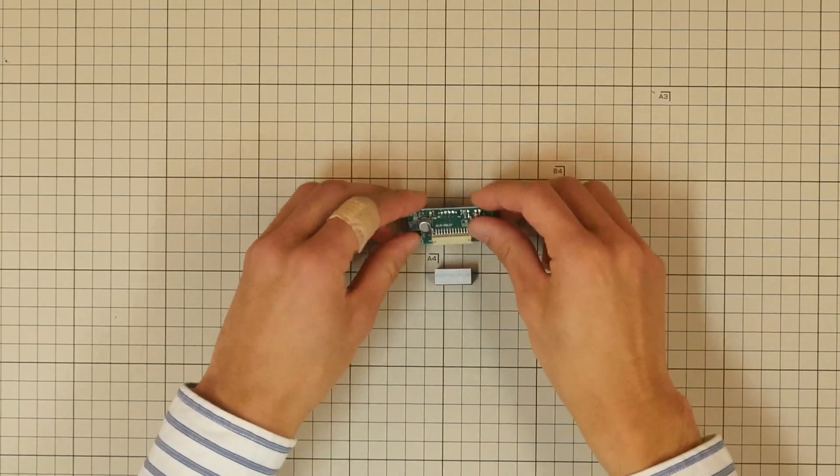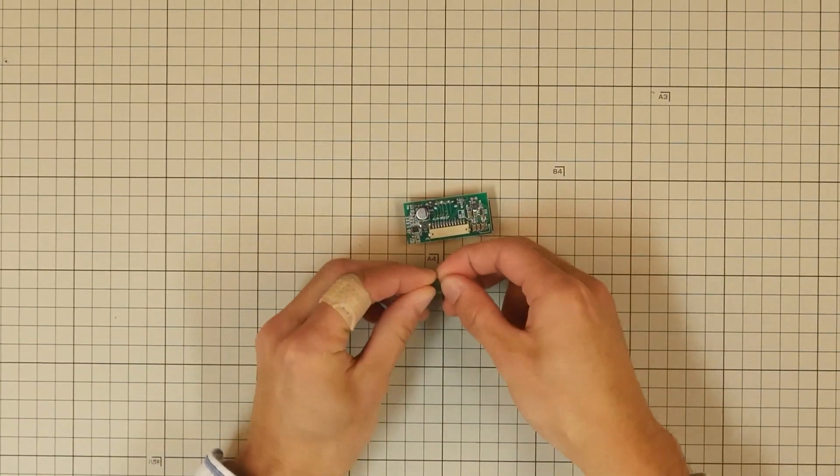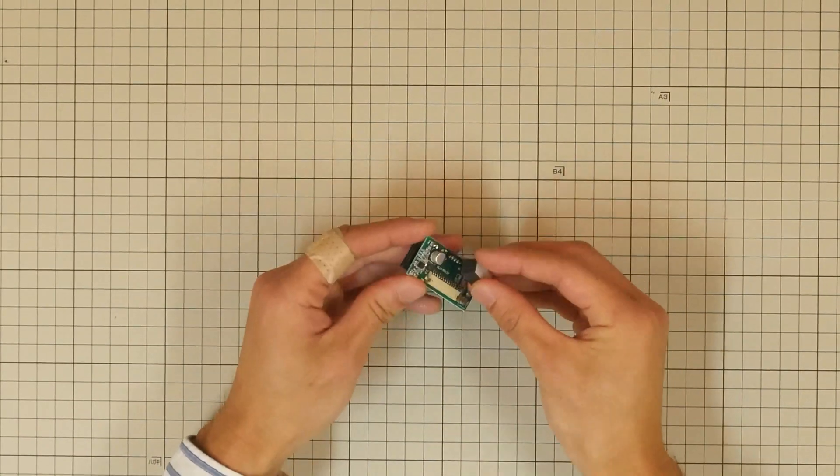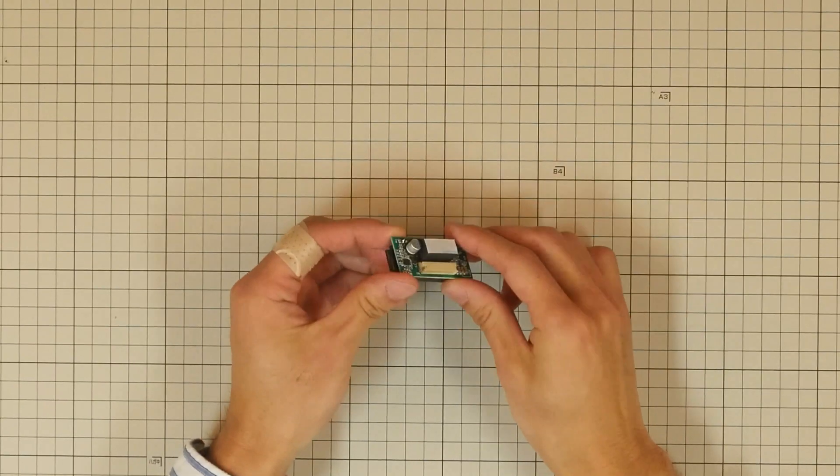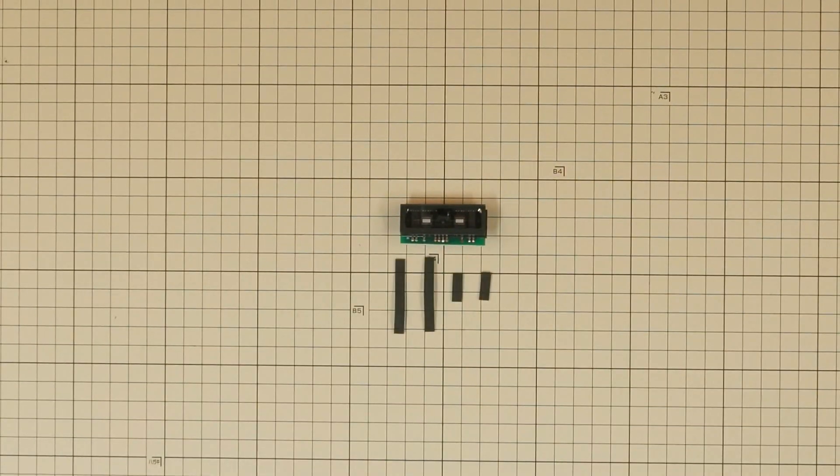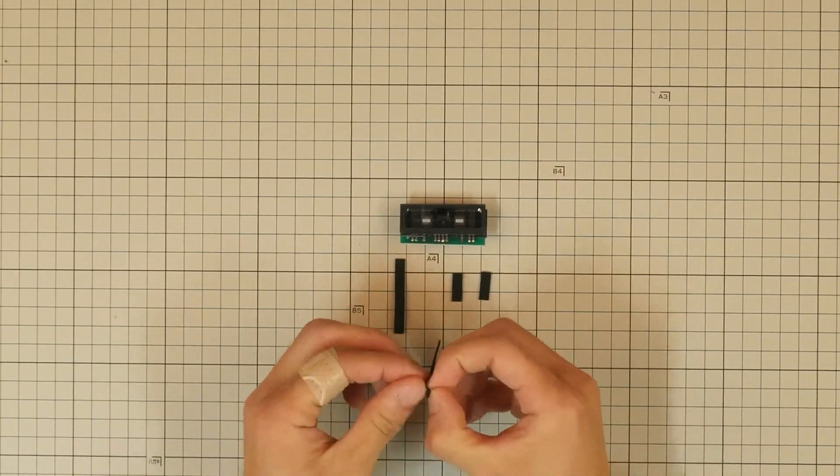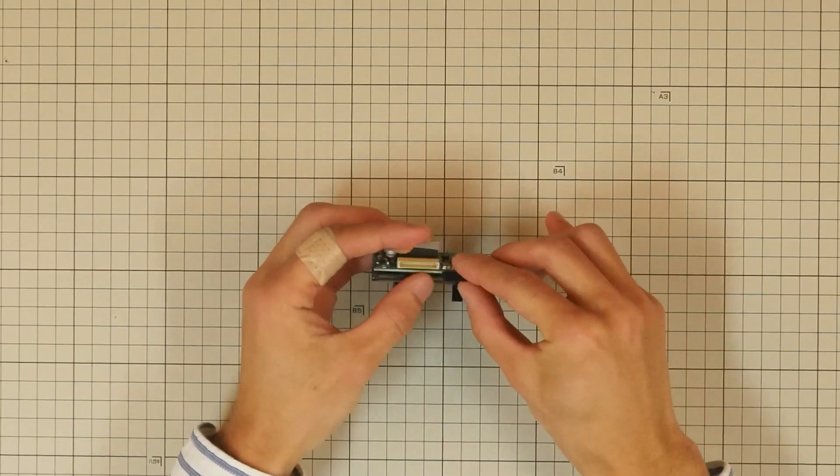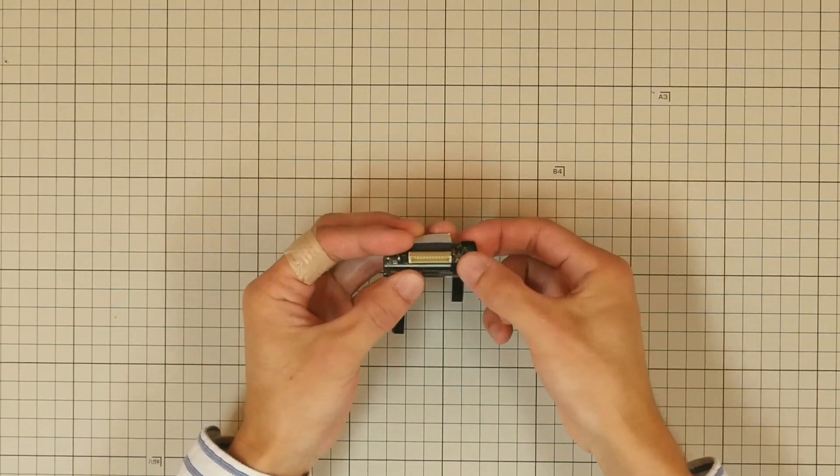First, peel off the release paper from one side of the white cushion and attach it to the back of the NewTube circuit board. Likewise, take the two long black cushions and attach them to the edges of the NewTube circuit board, like so.